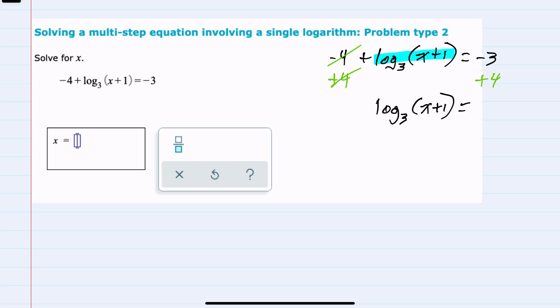That isolates the logarithm on the left and gives us a 1 on the right-hand side. Now that I have a logarithm equal to a constant, I can simplify by converting back to exponential form.